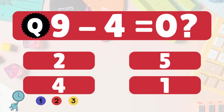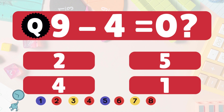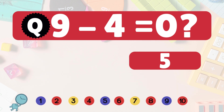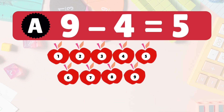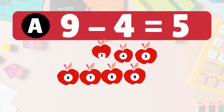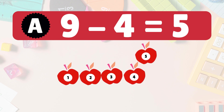9 minus 4 equals what? We have 9 apples. Take away 4 apples: 1, 2, 3, 4. How many are left? 1, 2, 3, 4, 5. That's right, 9 minus 4 is 5. Great job.